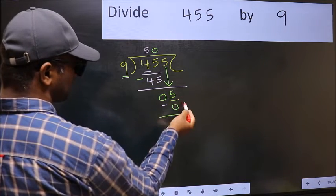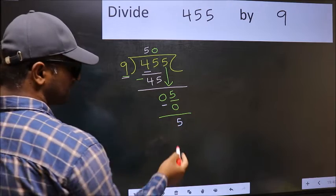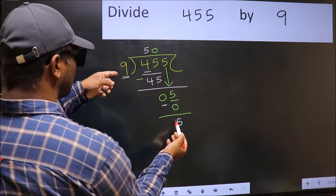Over here, we did not bring any number down, and 5 is smaller than 9, so now you can put dot and take 0. So 50. A number close to 50 in 9 table is 9, 5, 45.